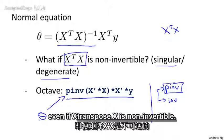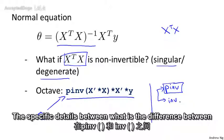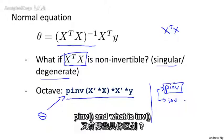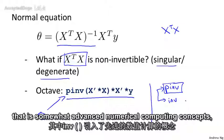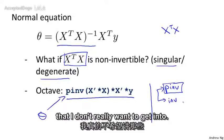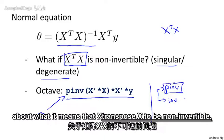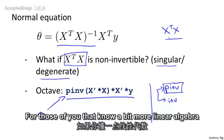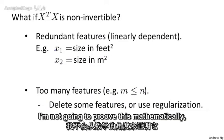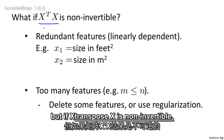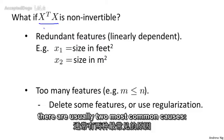even if X transpose X is non-invertible. The specific details between what is the difference between pinv and what is inv, that's somewhat advanced numerical computing concepts that I don't really want to get into. But I thought in this optional video, I'll try to give you a little bit of intuition about what it means for X transpose X to be non-invertible for those of you that know a bit more linear algebra and might be interested. I'm not going to prove this mathematically, but if X transpose X is non-invertible, there are usually two most common causes for this.